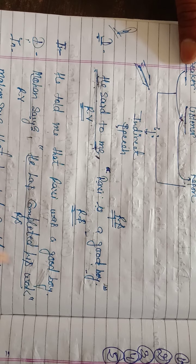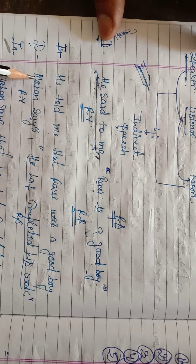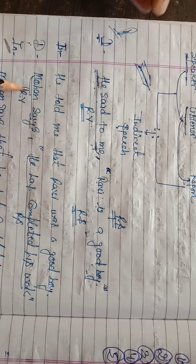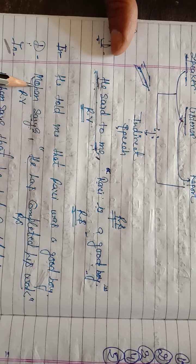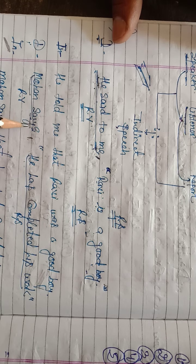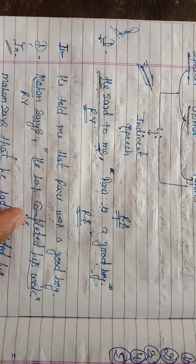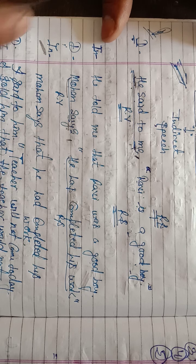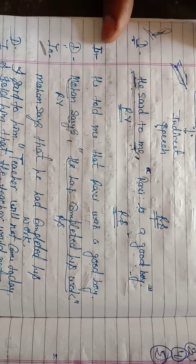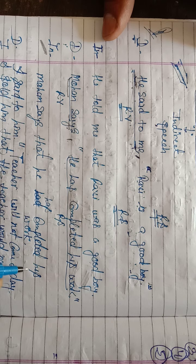Another example: 'Mahan says he has completed his work.' Here 'Mahan' is the speaker. There is no listener mentioned, but there must be a listener — whoever he is speaking to. 'He has completed his work' is the reported speech, and 'Mahan says' is the reporting verb. In indirect: 'Mahan says that he has completed his work.'